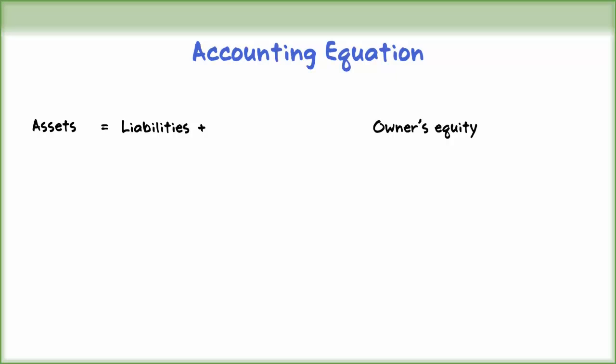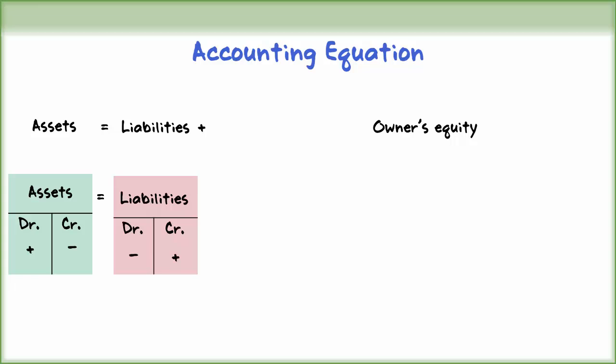The basic accounting equation shows that the assets of a business must equal the liabilities plus owner's equity. Assets are the resources of a business. Assets have a normal debit balance, increase with a debit, and decrease with a credit. Liabilities are the legal debts or claims of a business against its assets. Liabilities have a normal credit balance, increase with a credit, and decrease with a debit.